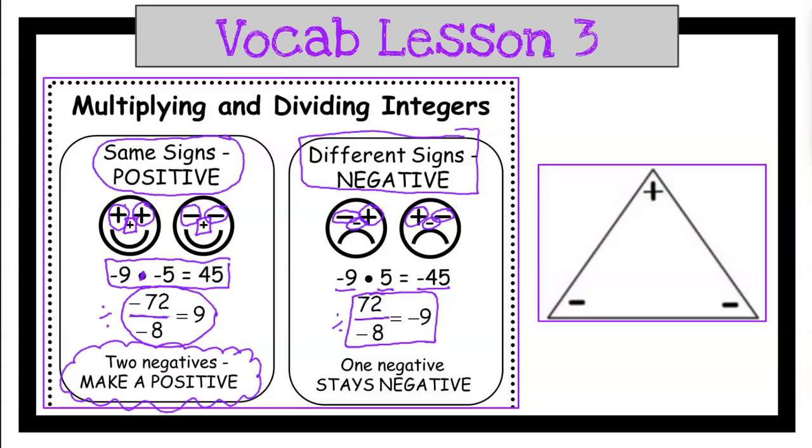One negative makes it stay negative. The other way you can use is this triangle here. So if we had negative 9 times negative 5, I would say negative times a negative gives me a positive answer, so I would know that it'd be positive 45. You can always use that triangle.